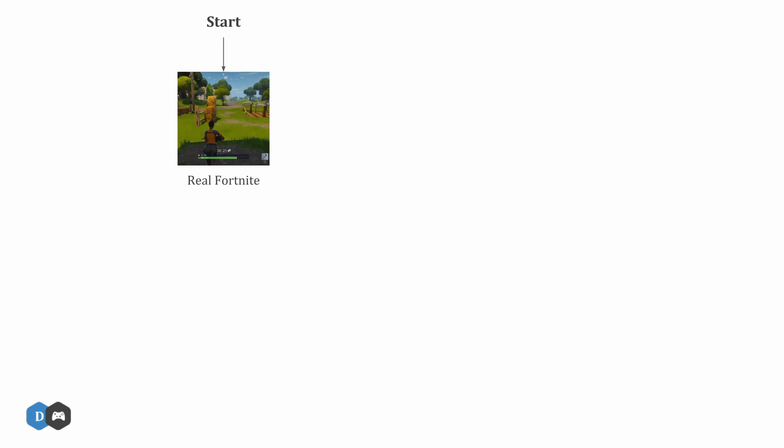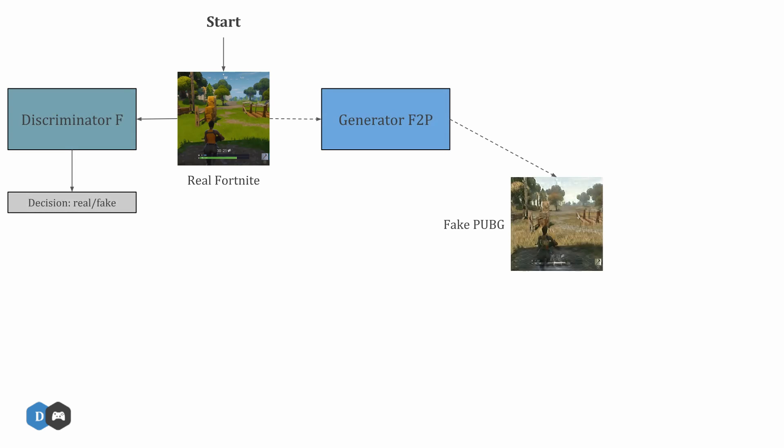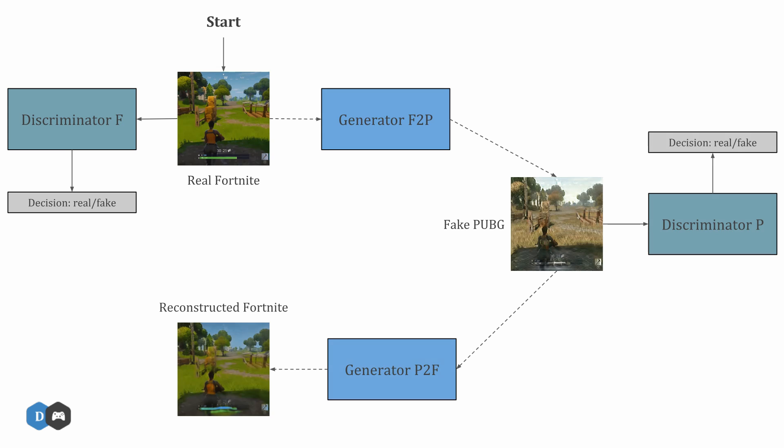We start the training process by taking the original image from Fortnite. We train two deep networks: one generator and one discriminator. The discriminator learns over time to distinguish between real and fake images of Fortnite, while the generator converts the input image from the original domain to the target domain using a random PUBG screenshot. To ensure this transformation is meaningful, we enforce a condition of reconstruction — simultaneously training another generator-discriminator pair that reconstructs the image in the original domain from the fake domain. We enforce that this reconstruction must be similar to the original image, giving us a cycle loss that we aim to minimize. This is similar to how autoencoders work, except we are not looking for an encoding in the middle step but an entire image from another domain.